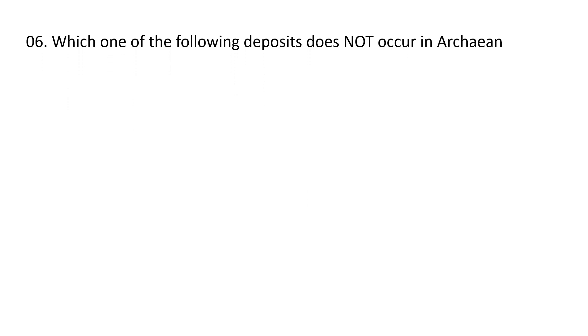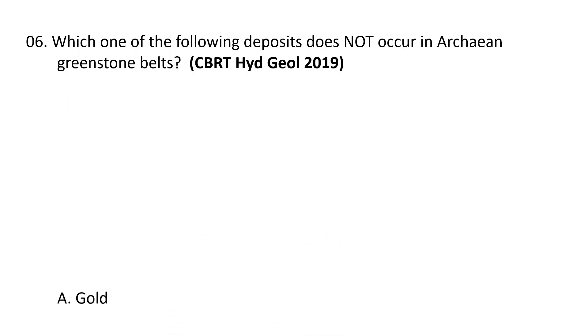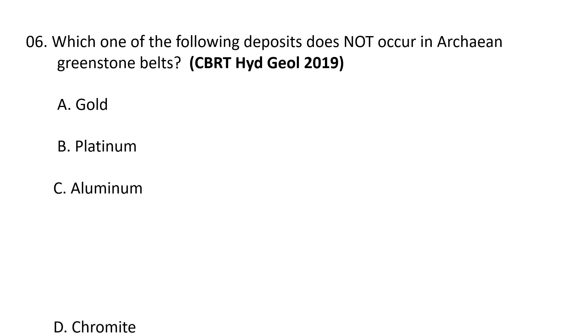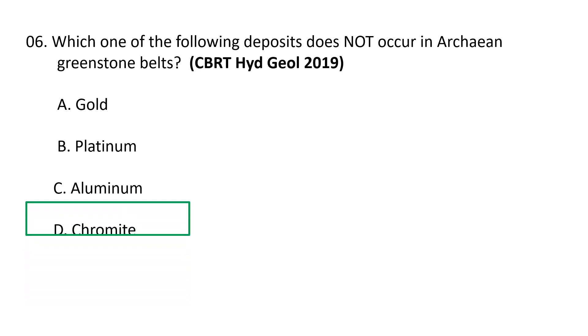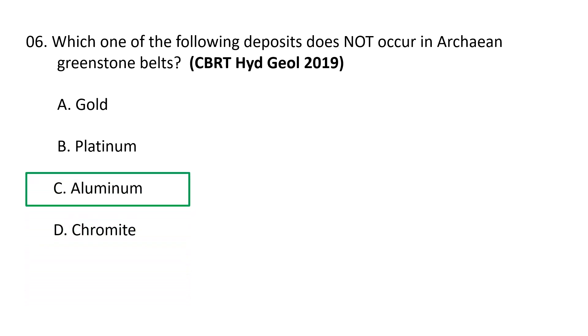Next question. Which one of the following deposits does not occur in Archaean greenstone belts? A. Gold, B. Platinum, C. Aluminium, D. Chromite. The correct answer is C — Aluminium.